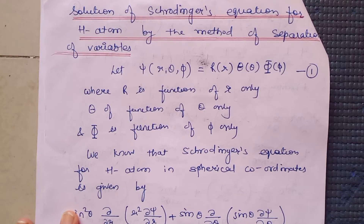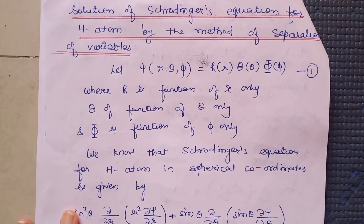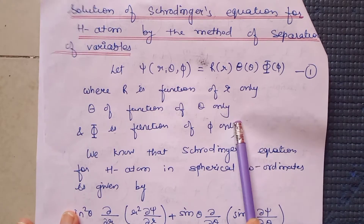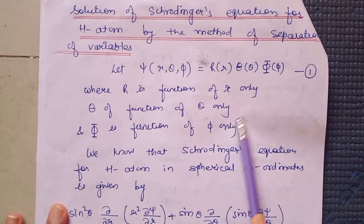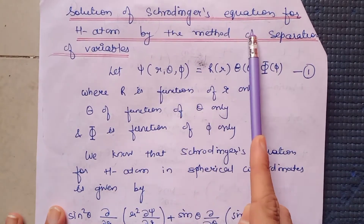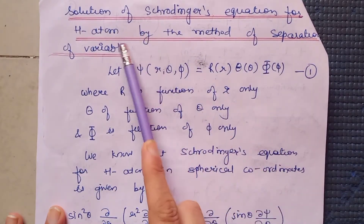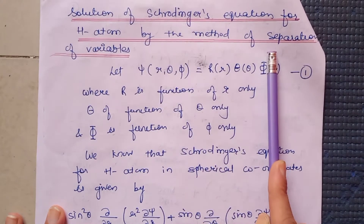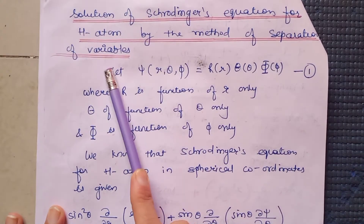Hello everybody. In the last lecture we framed Schrödinger's equation for hydrogen atom using spherical polar coordinates. In this lecture we will find out the solution of Schrödinger's equation for hydrogen atom by the method of separation of variables.